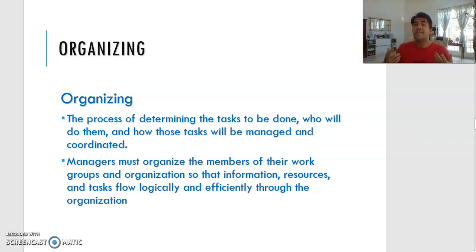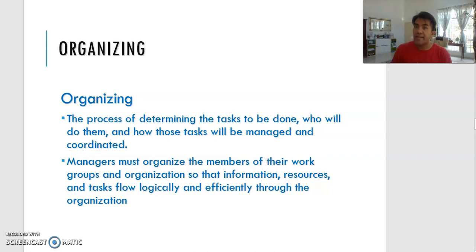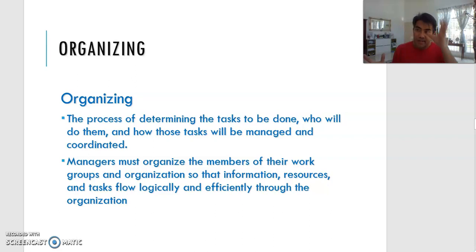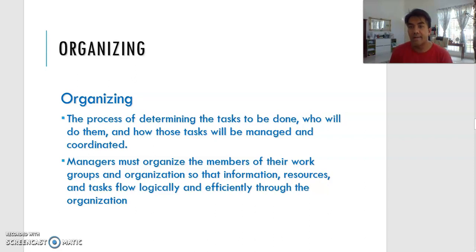Once you know what you need to do, you need to think about how to organize. This is where organizational structure comes in — you need to identify the tasks that need to be done, who will do them, and how those tasks will be managed. You need to identify what type of jobs need to be performed, who can perform those jobs, and how tasks will be managed. Organizational structure can be based on function, product, geographical location, or customer.